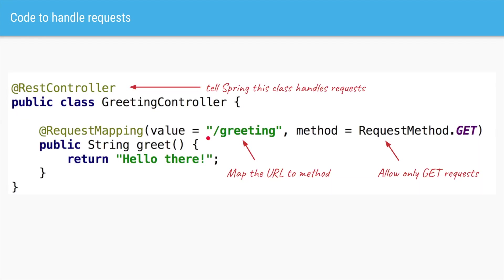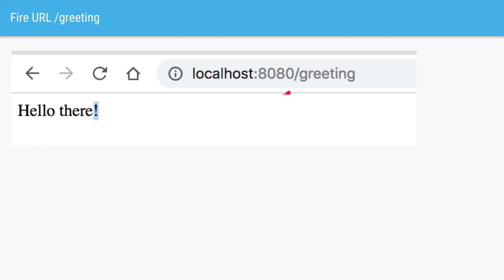So two simple steps: we told Spring using the @RestController annotation that this particular class is a servlet that has to handle incoming requests. And we added a method with a @RequestMapping annotation specifying the URL we want to handle. So when we hit /greeting, it matches that URL, calls that method, and the method returns a string which Spring passes on to the browser or to the client.